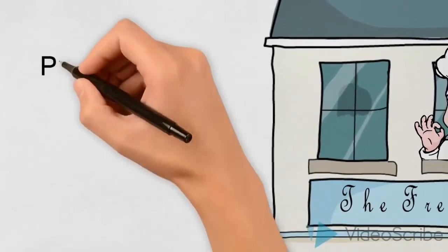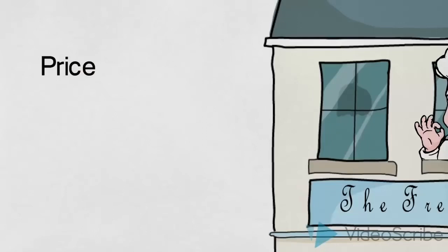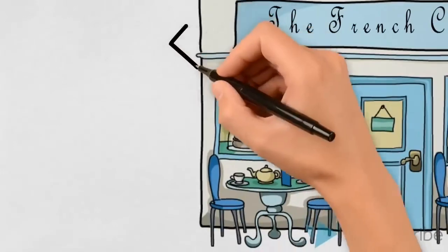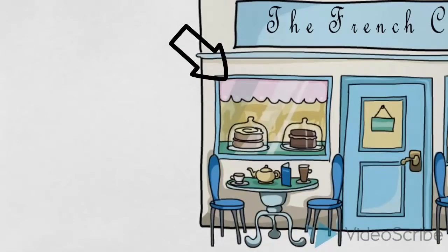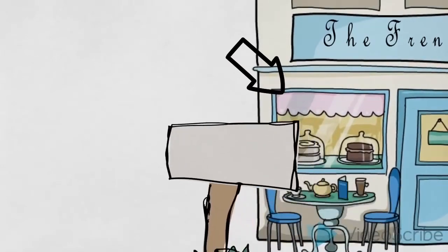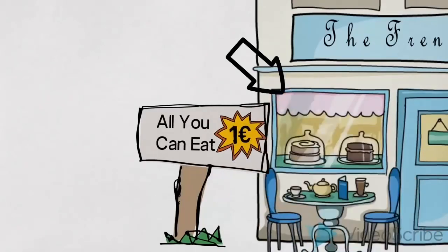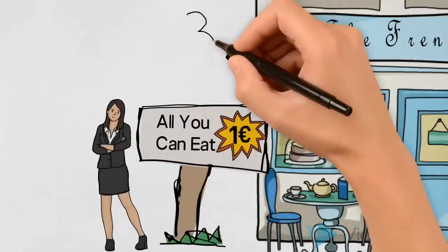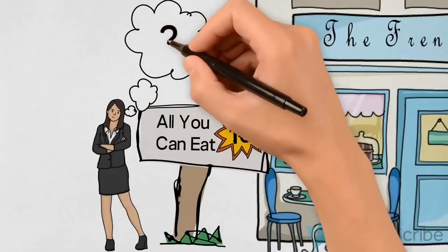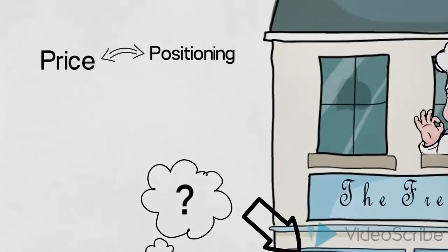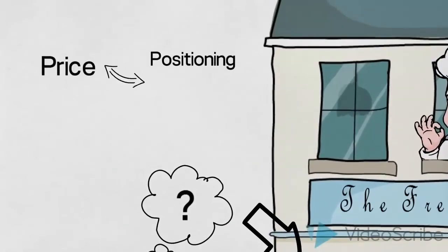There are many reasons why charging the right price matters to the success of our French café. Firstly, we need to ensure that the price makes sense to our chosen target group — that they perceive the price to correspond with the way we have positioned the café in their minds. If we look in the window, we can see that this café serves high quality, delicious French cakes and has a decor that fits. Therefore, it would send the wrong signal if we were to charge very low prices, like offering an all-you-can-eat buffet for one euro. Charging a price that doesn't correspond with our positioning would leave our customers confused. Drawing a link to the other elements of the marketing mix, we need to make sure that our price is in line with all other elements of the marketing mix.